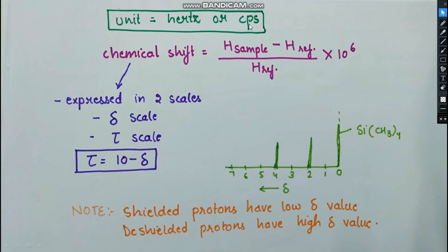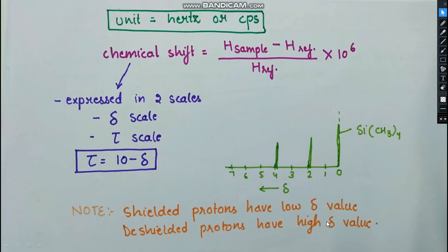The unit of chemical shift is Hz, CPS (cycles per second), or PPM (parts per million). It is calculated by the formula: δ = (ν_sample − ν_reference) / ν_reference × 10⁶. Chemical shift is expressed on two scales: the delta (δ) scale and the tau (τ) scale, which are related by a formula. TMS is taken as zero, and chemical shifts of other compounds are calculated relative to it. Protons giving a low value of δ are shielded, while those giving a high value of δ are deshielded.